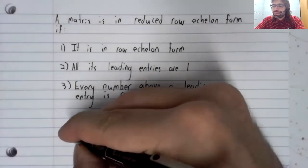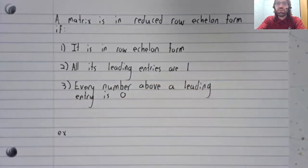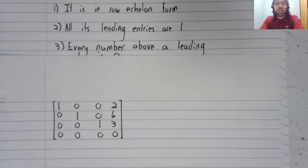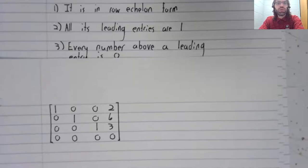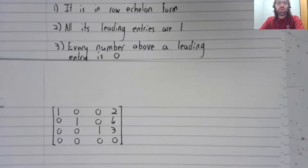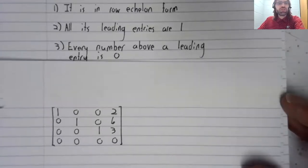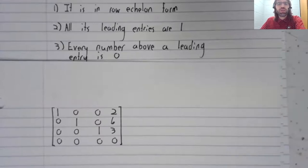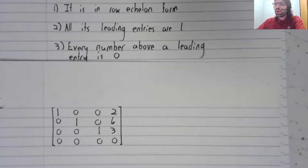So, for example, this matrix is in reduced row echelon form. And to see that, let's just go through the requirements one by one.